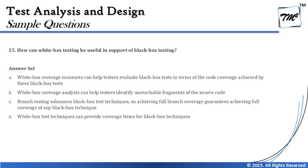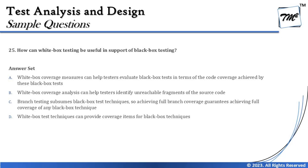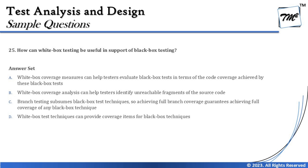Option C says: branch testing subsumes black box test techniques, so achieving full branch coverage guarantees achieving full coverage of any black box test technique. We did have a line in white box testing that 100% branch testing guarantees 100% statement coverage — but that relationship is between statement and branch coverage, not between white box and black box. Also, 'subsumes' implies black box is a subset of branch testing, meaning you wouldn't need black box at all — which is clearly not true.